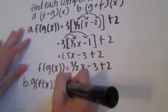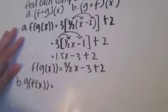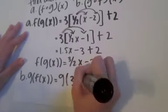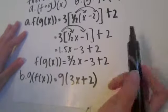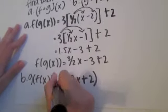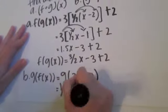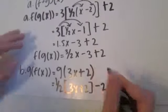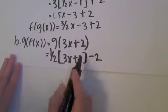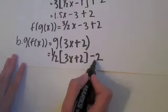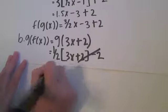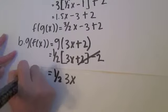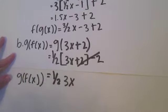To find g of f of x, we always rewrite the problem first. This time it's g of three x plus two, and we add in the g of x formula: one half of three x plus two minus two. The two's cancel out, so we're left with one half of three x, which equals three halves x. That's g of f of x, and those are our two answers.